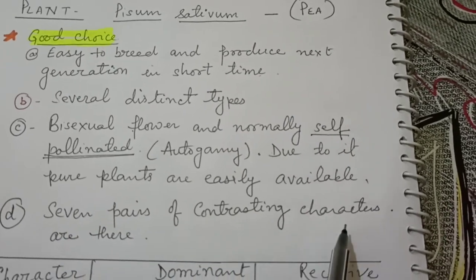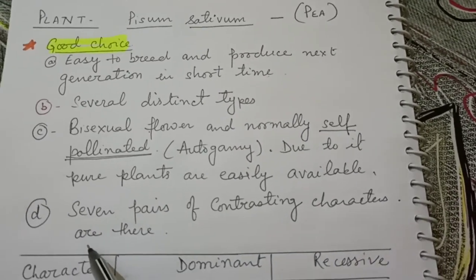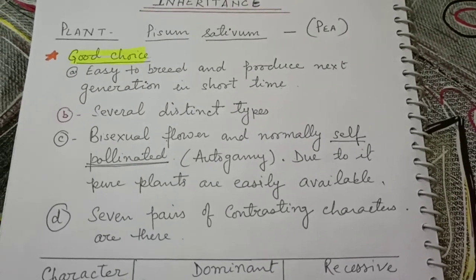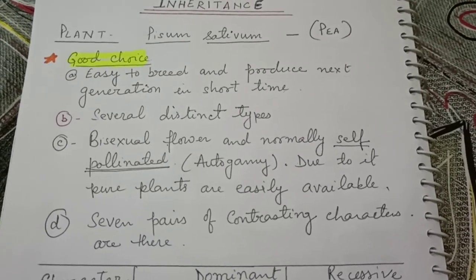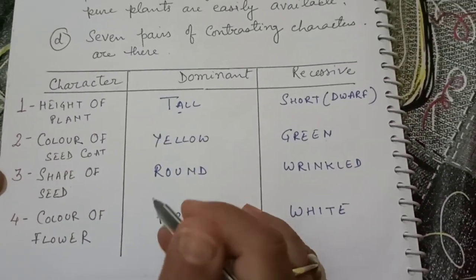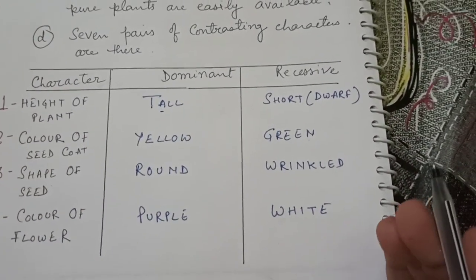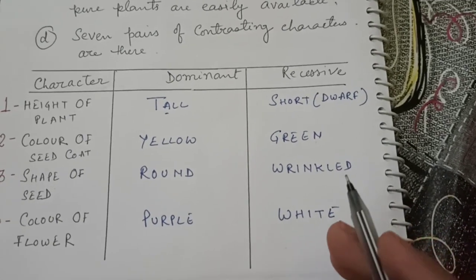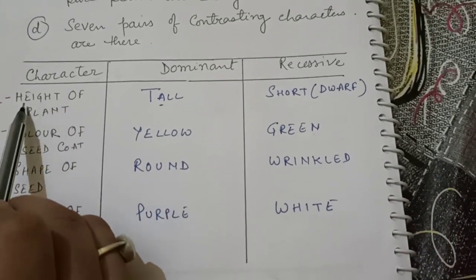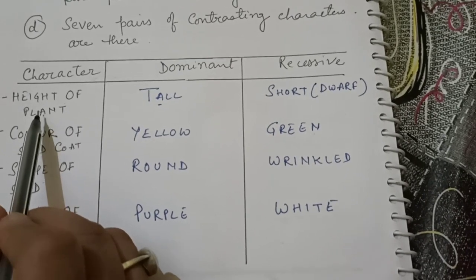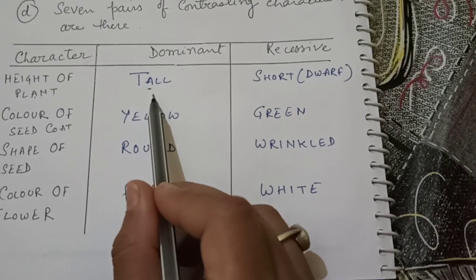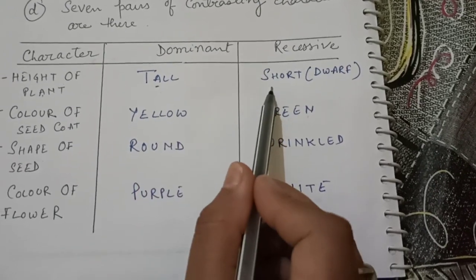Seven pairs of contrasting characters were noticed by Mendel. I have taken only four, because among these four characters we will be discussing the next two laws of Mendel. Character number one is the height of the plant. The traits are tall and short, where tall is the dominant and short is the recessive.